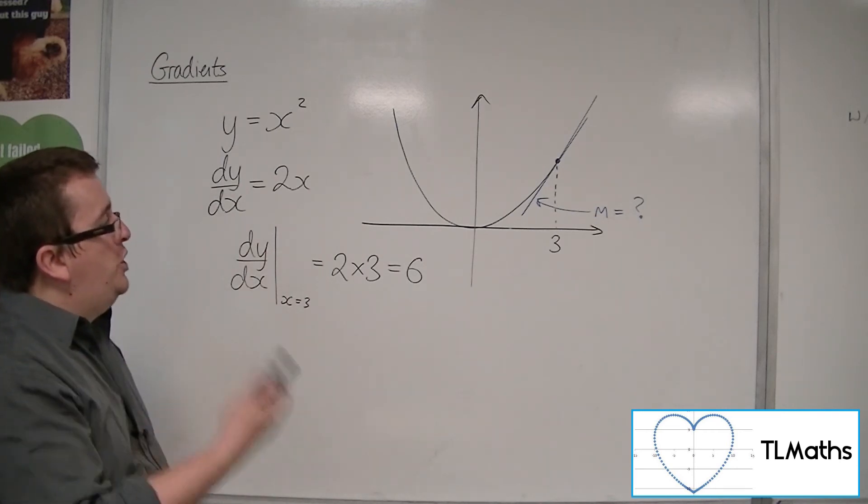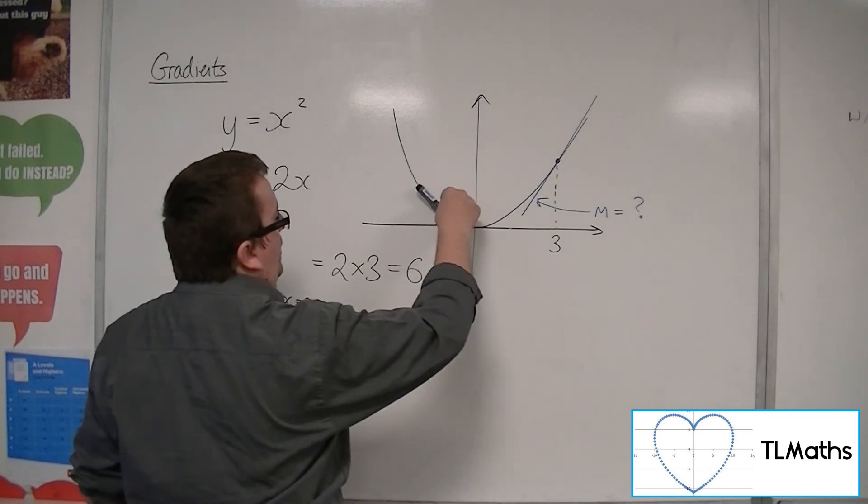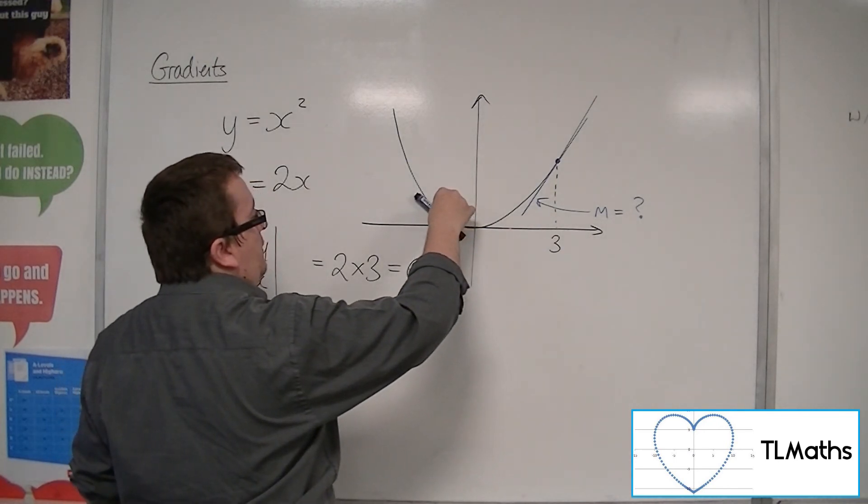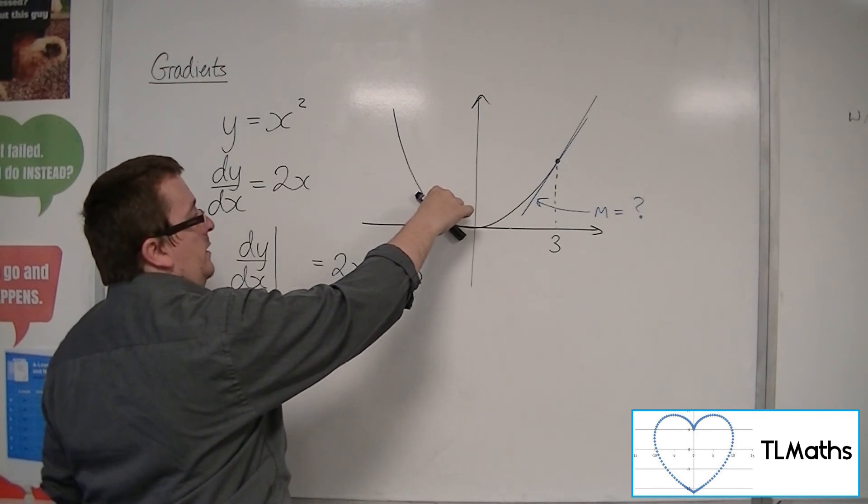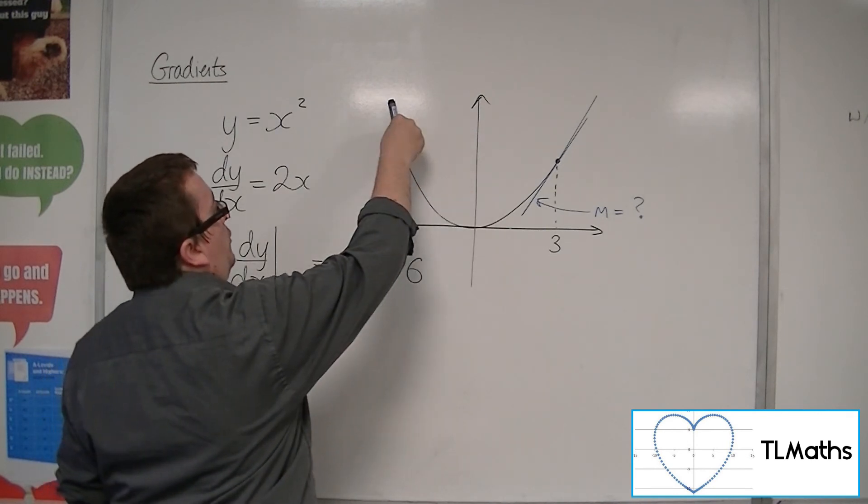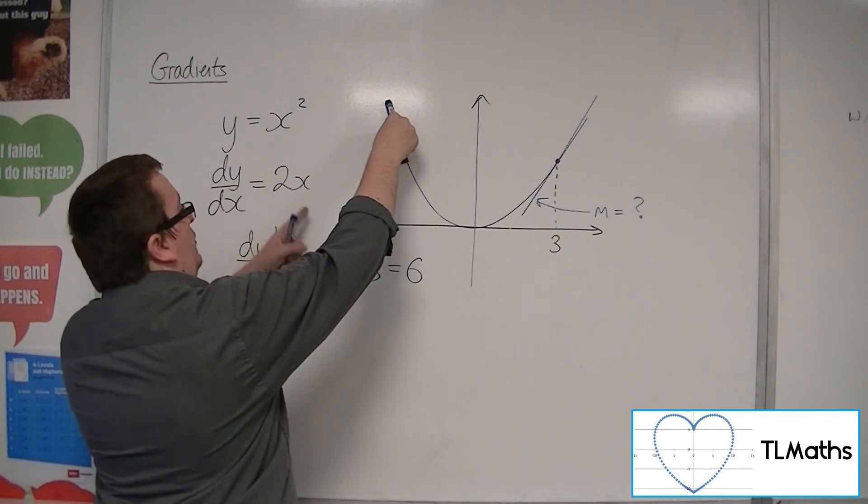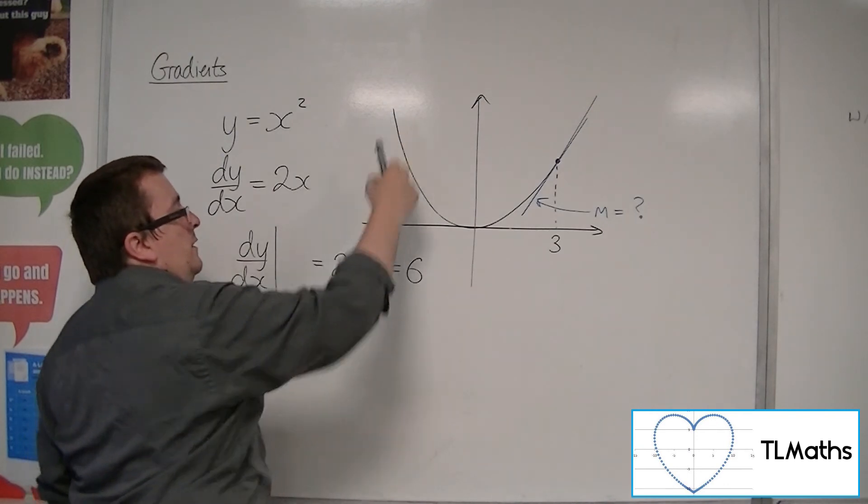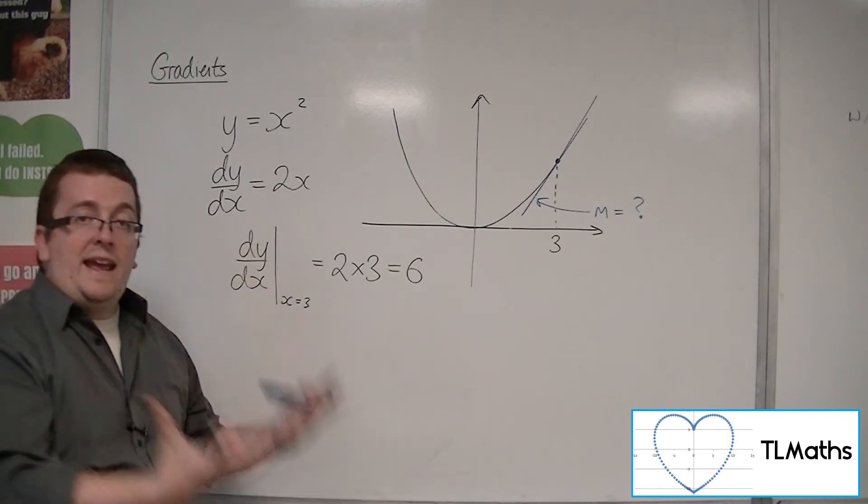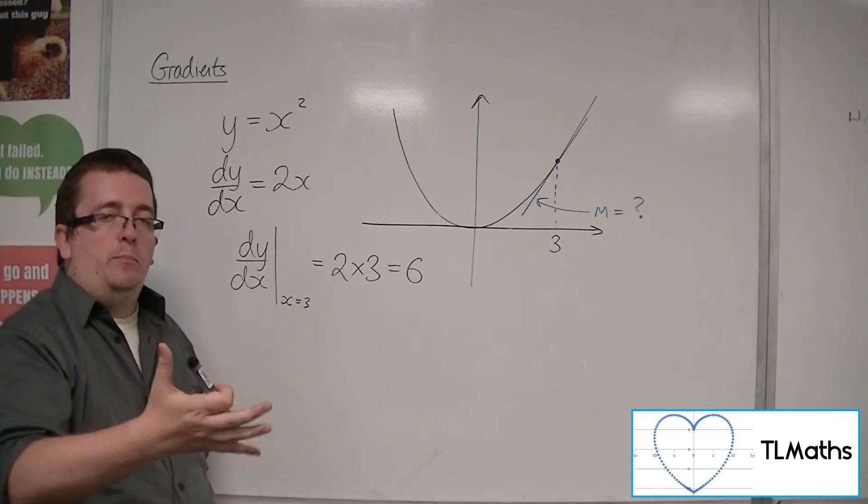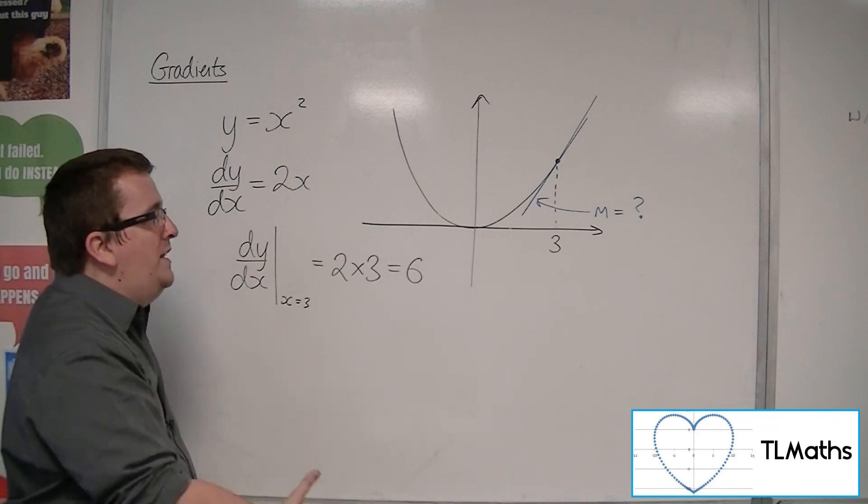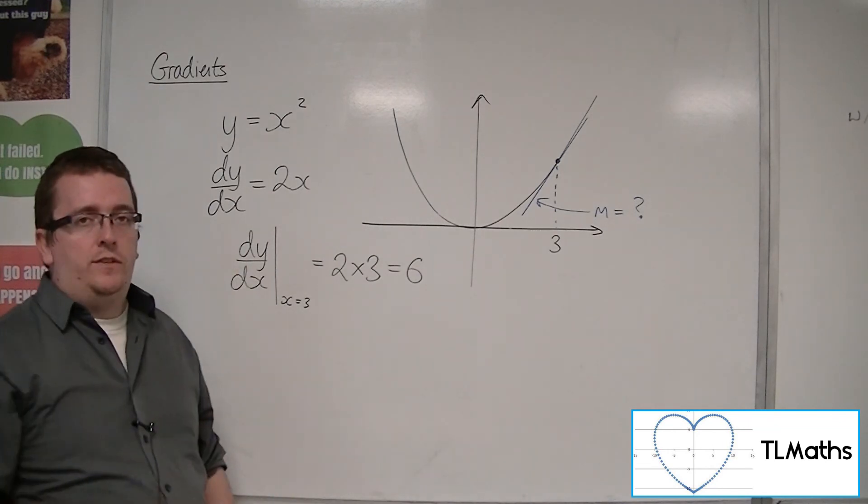And so I could choose any other point I like. I could choose minus 1, and I know that the gradient of the line at that point will be 2 lots of minus 1, so minus 2. If I chose it at minus 4, the gradient would be 2 lots of minus 4, so minus 8. So I can now find the gradient of the curve at any particular point that I want. And it's finding me the gradient of the tangent at that point.